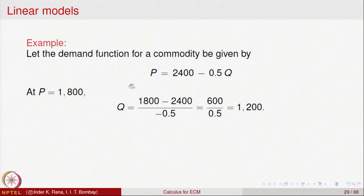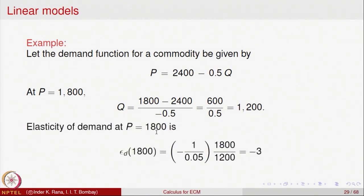At price P = 1800, we can calculate Q from this equation, and Q comes out to be 1200. That means when the price is 1800, the quantity demanded is 1200 units. The elasticity at P = 1800 is given by minus 1 over B, multiplied by P/Q. Here B = 0.5, so it is minus 1/0.5 × 1800/1200, which equals minus 3. The coefficient of elasticity for this function at price 1800 is minus 3.